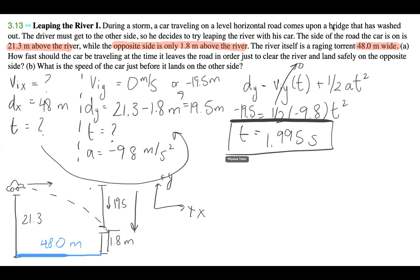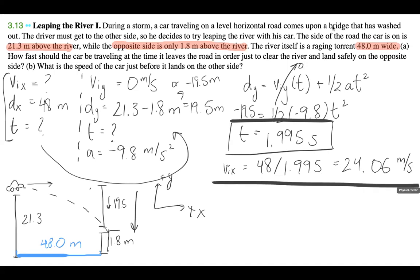Now because we have t, we can plug it back into this simple speed equation. So vix equals 48 divided by 1.995, and with that I get 24.06 meters per second. So that is going to be our answer to part A. How fast should the car be traveling at the time it leaves the road? It should be traveling at 24.06 meters per second.